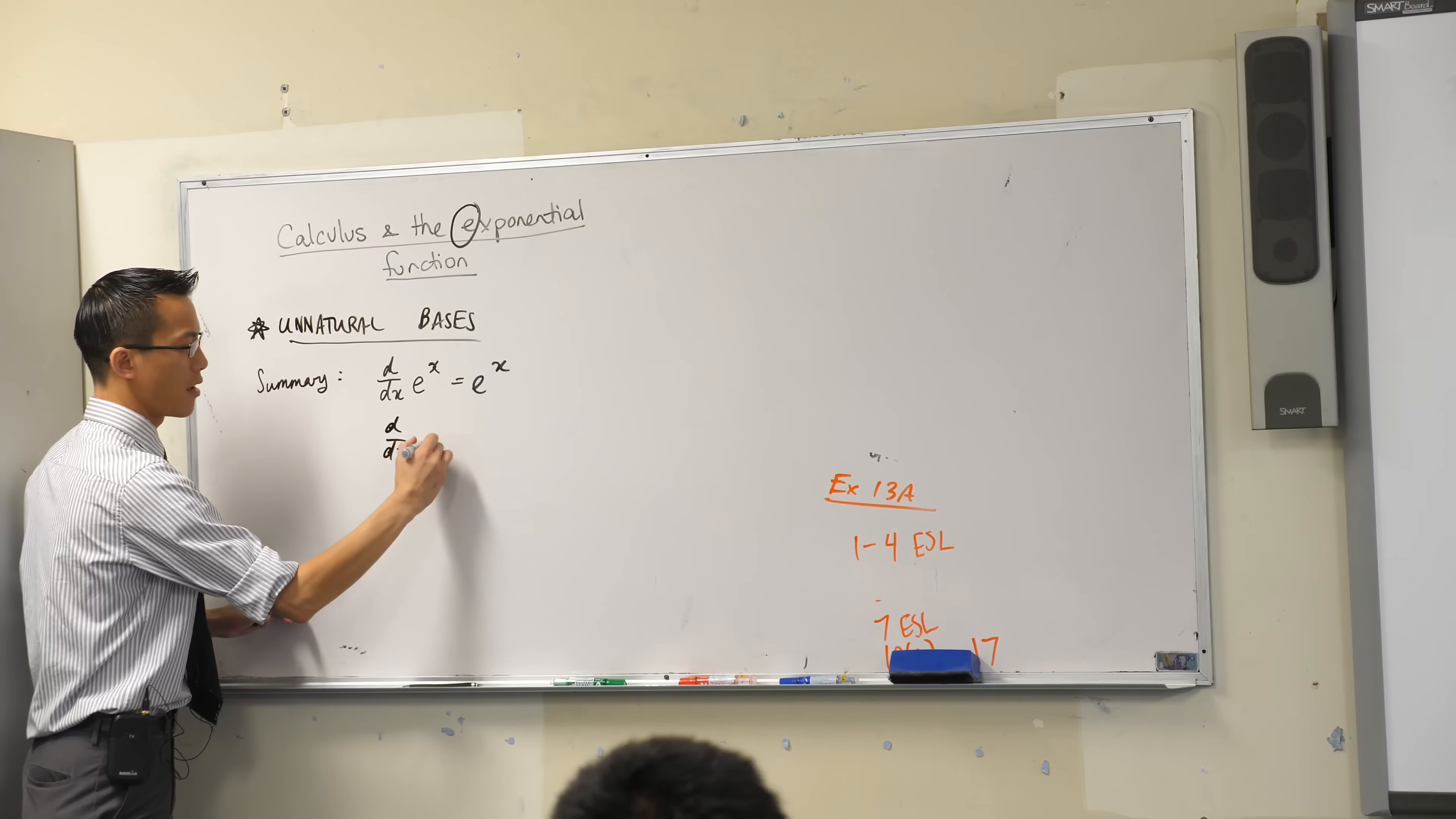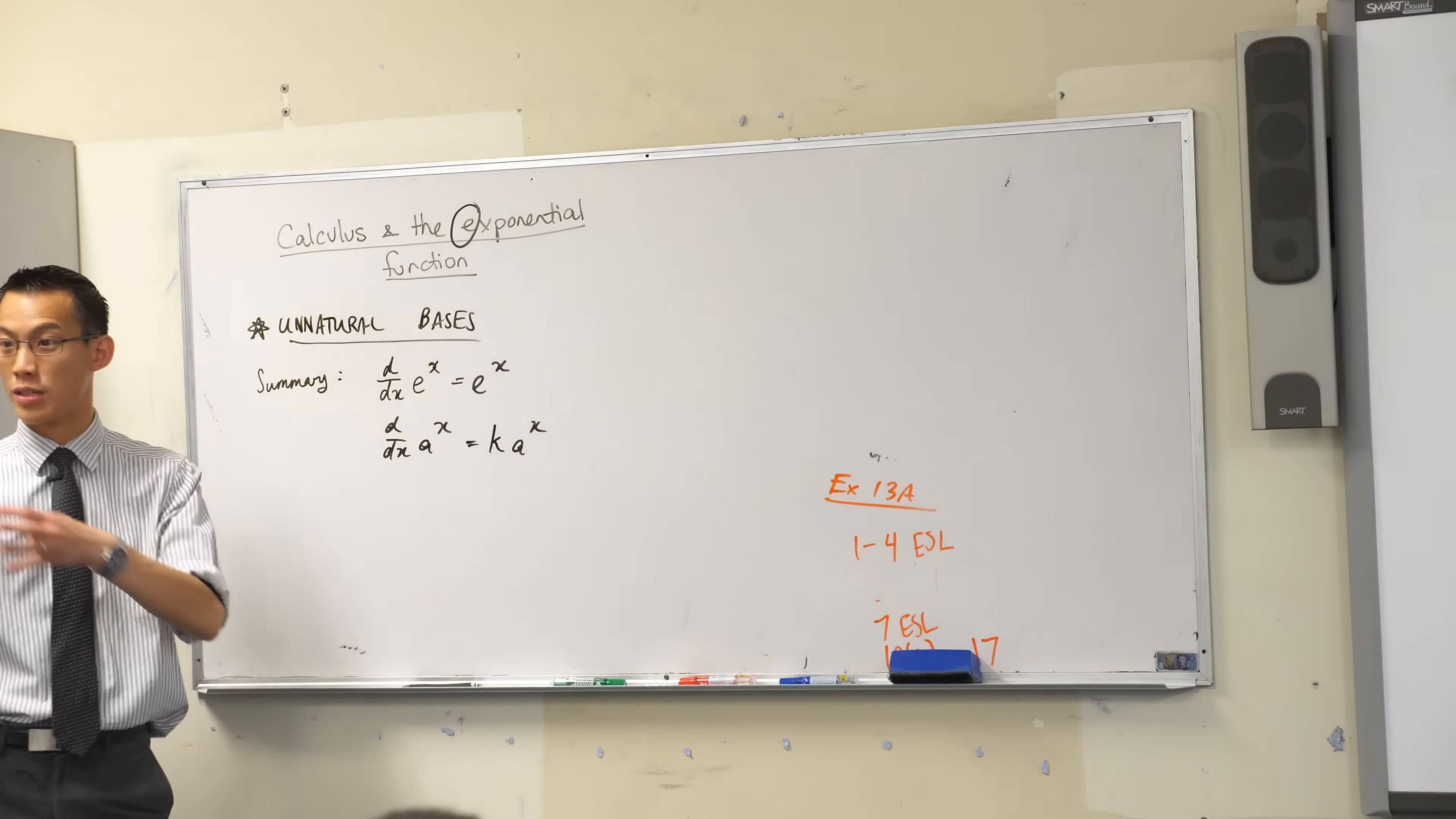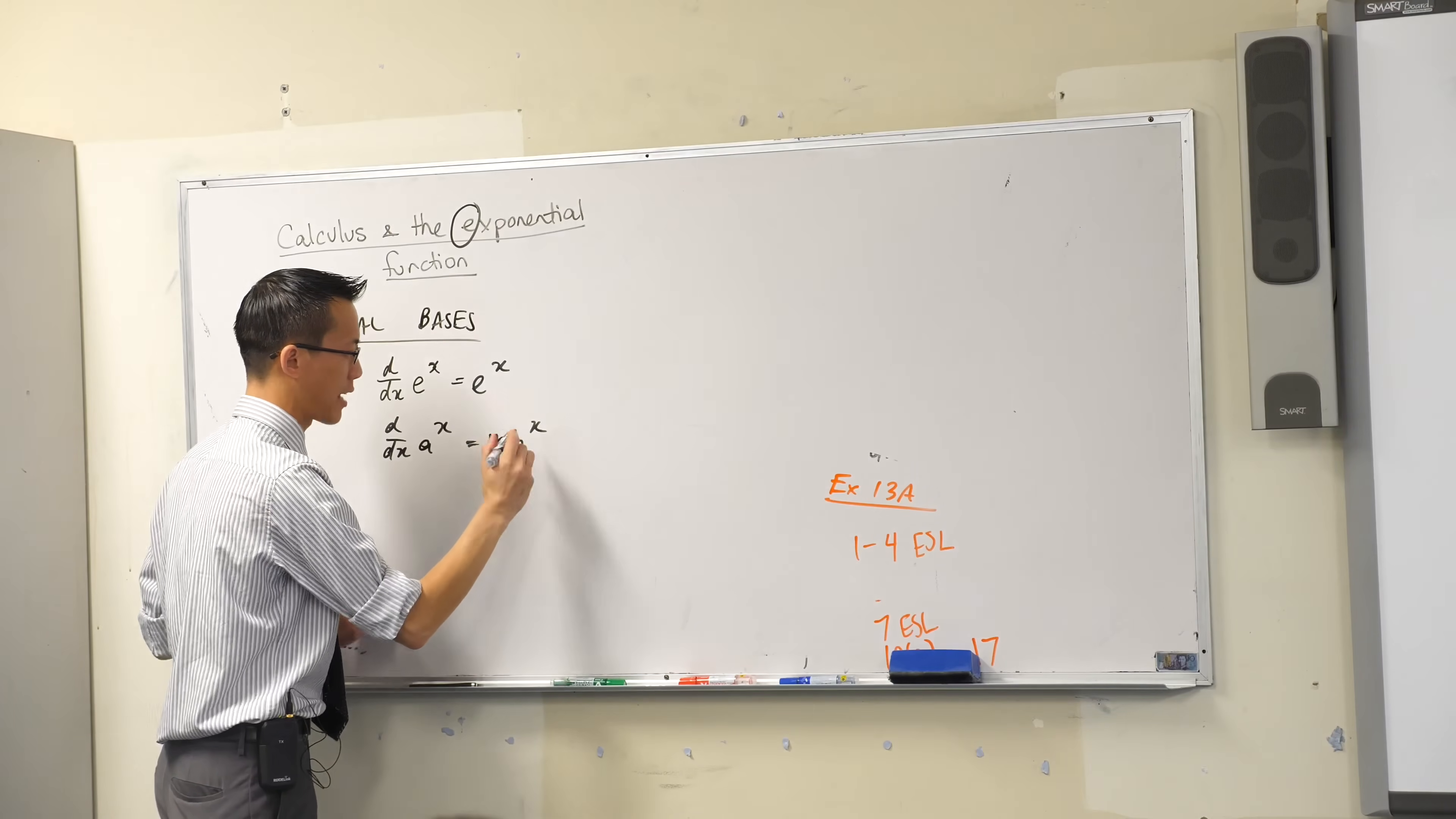But when you have bases other than that special number e, you get like so close. You get an exponential, but it's off by scale. It was like above or below. So we multiply by, I think I called it, did I call it m or n? M. M is what I called it, because I'm going to use k for something later.